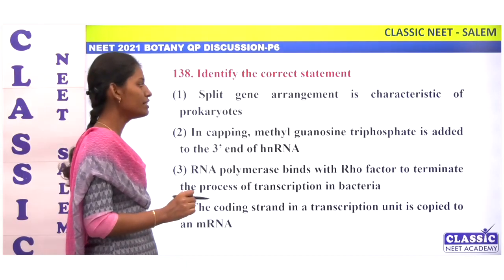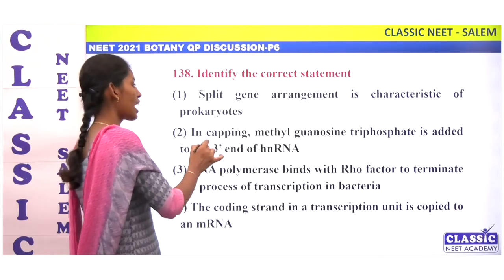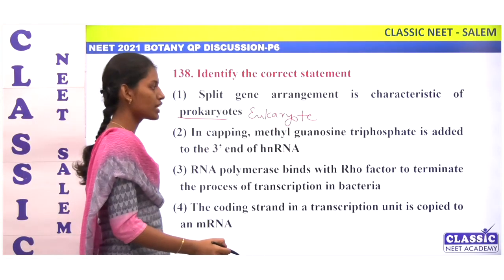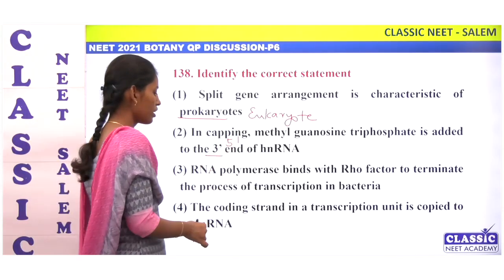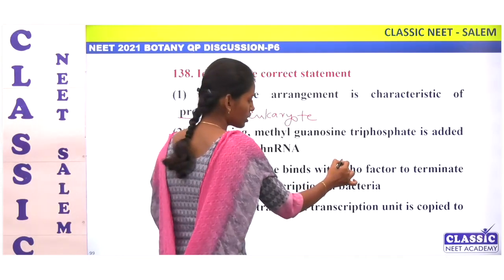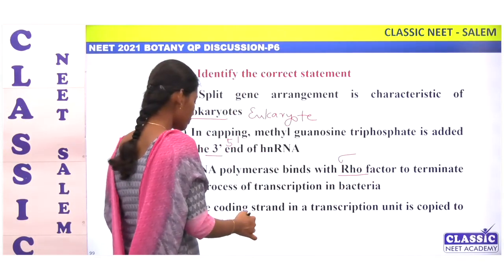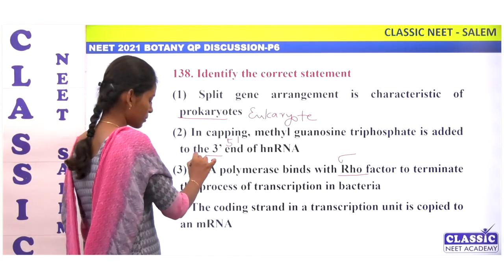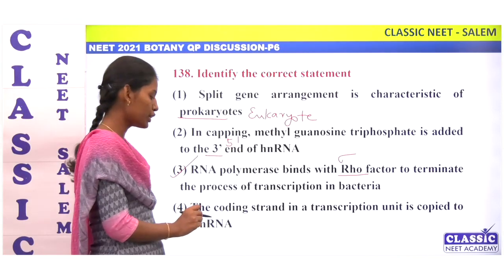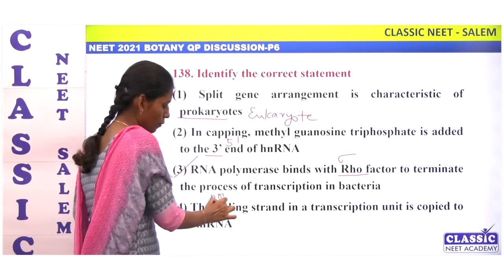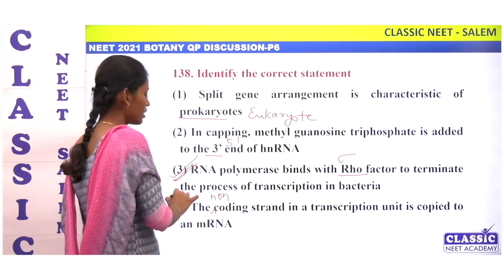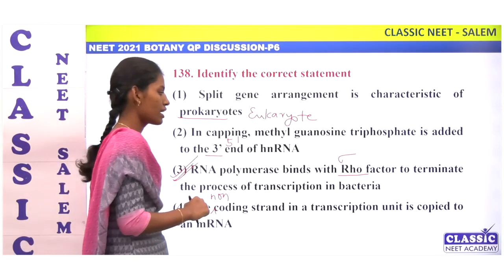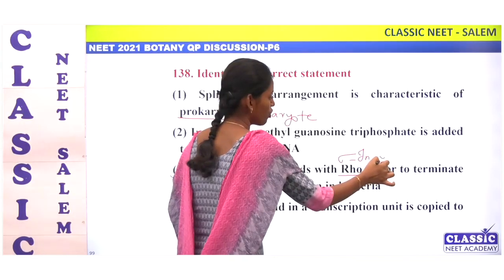Identify the correct statement. Split gene arrangement is a characteristic of eukaryotes — correct. In capping, methyl guanosine triphosphate is added to the 5' end. RNA polymerase binds with rho factor to terminate transcription in bacteria — this is correct. It is actually sigma for initiation and rho for termination. The coding strand in a transcription unit is not copied — the non-coding strand is copied to mRNA.